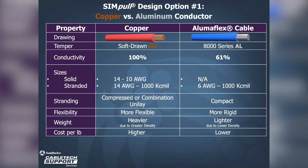Design option number one is whether we want to use copper or aluminum conductors. Our standard copper conductors are soft drawn, 99.9% pure copper and have 100% conductivity. End users can choose between a solid conductor in sizes 14 or 4-aught AWG, or a stranded conductor in sizes 14 gauge to 2,000 kcmil. Stranded conductors are usually compressed or combination unilay.